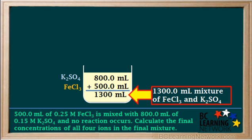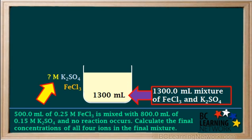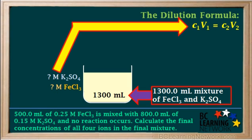So in our beaker, we have 1300 milliliters of a solution of FeCl3 and K2SO4 that are mixed. But what are the molar concentrations of K2SO4 and FeCl3 in the final mixture? When two solutions are mixed, both of them are diluted. So we find the final concentrations using the dilution formula, C1V1 is equal to C2V2.